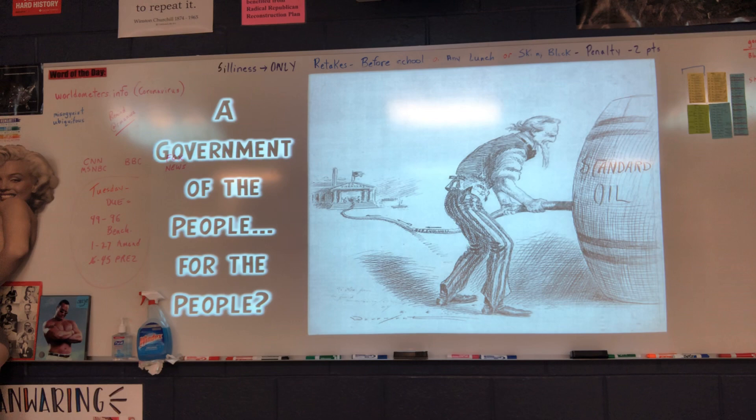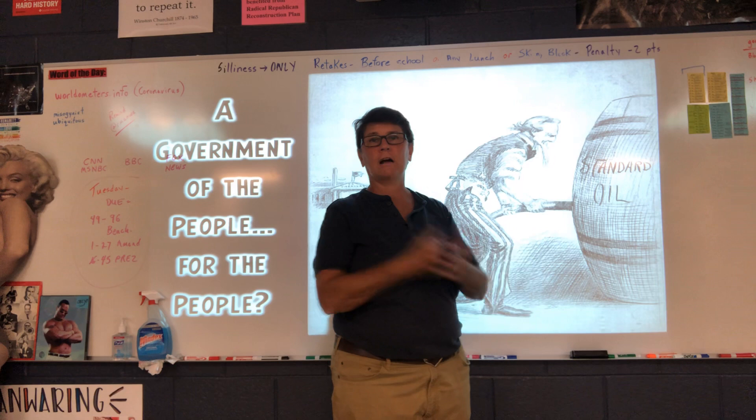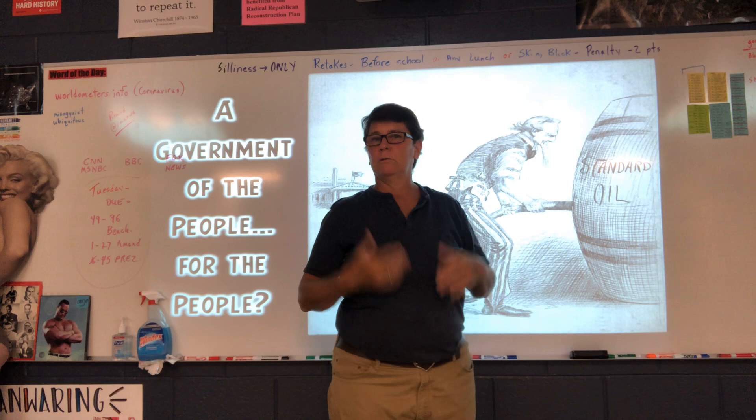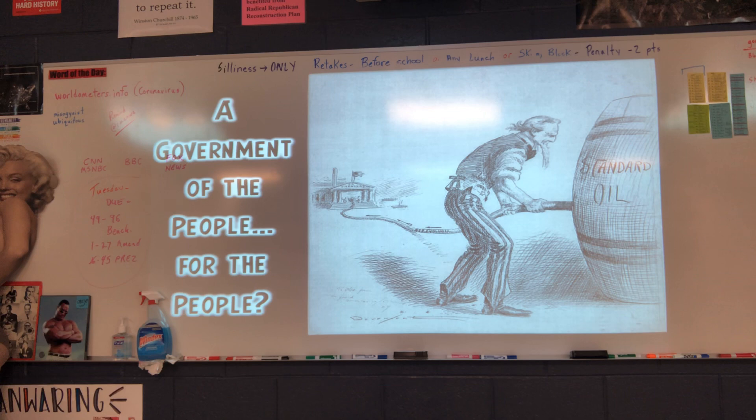The big question is: is it a government of the people or for the people? It was really for the rich people. Standard Oil — again, you have to know Rockefeller equals oil, Carnegie equals steel, Vanderbilt and Stanford equal trains and train tracks. The government wasn't for the people; the government always supported big business.